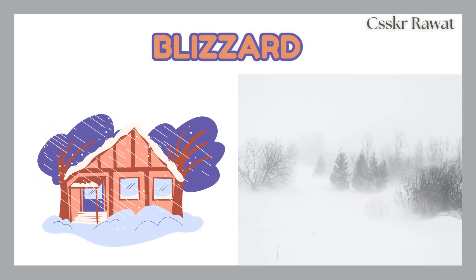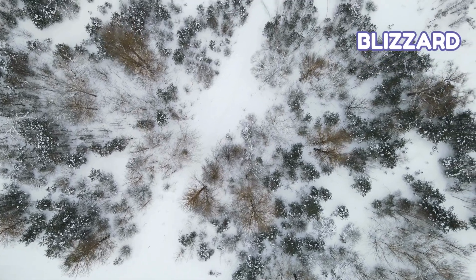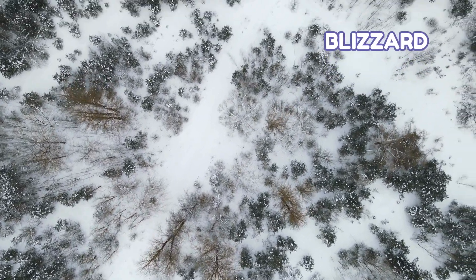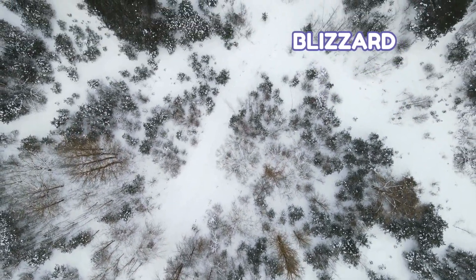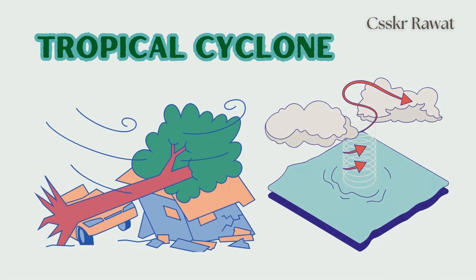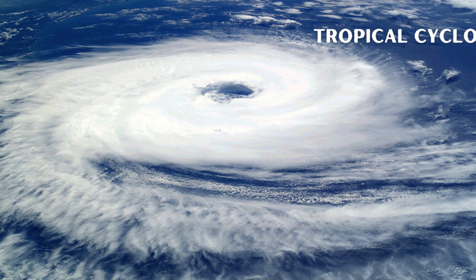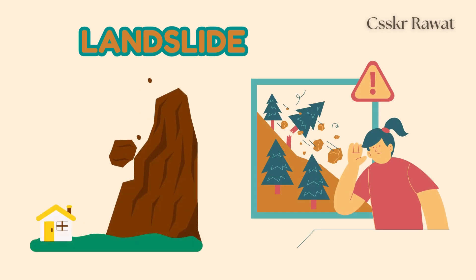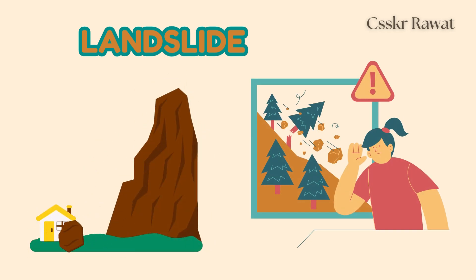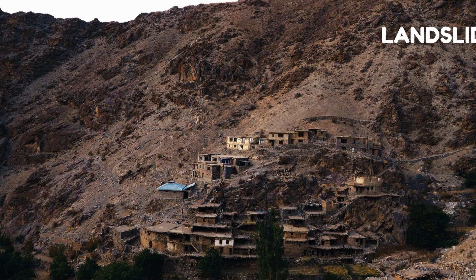Blizzard. Blizzards happen when there is a massive snowstorm with immense winds and little visibility. There is a lot of moisture in the air and it collides with cold air. Tropical cyclone. Tropical cyclones happen when fast moving, rotating, and well-organized cloud and thunderstorm phenomena develop.